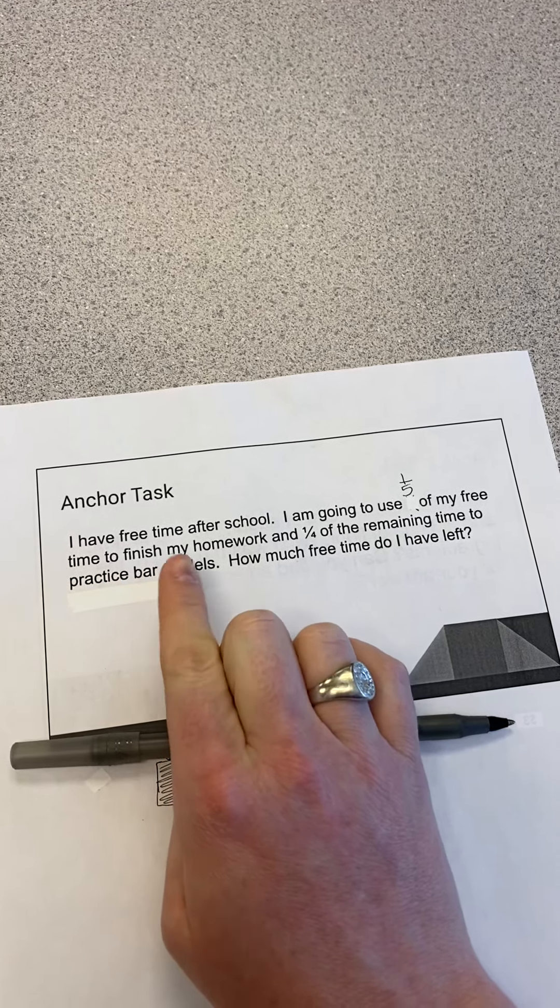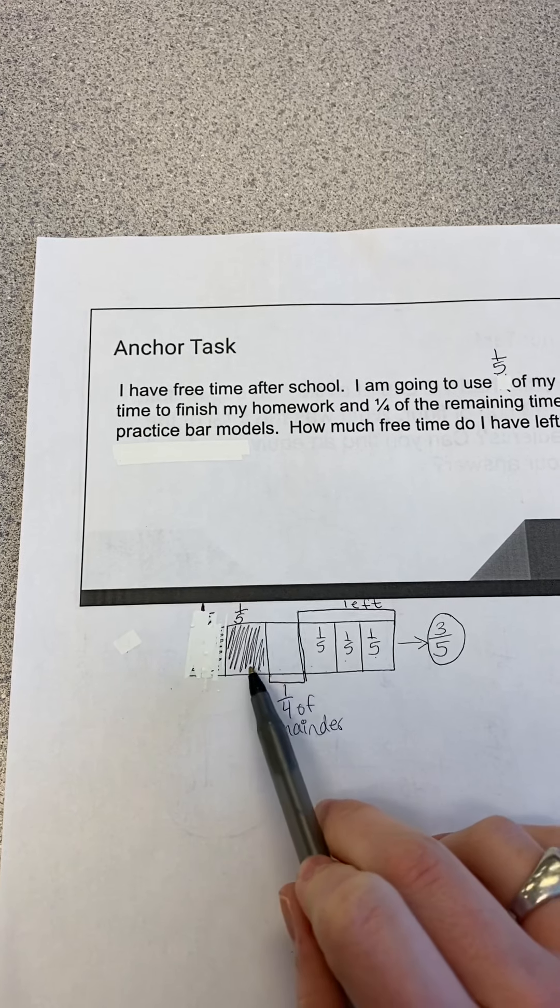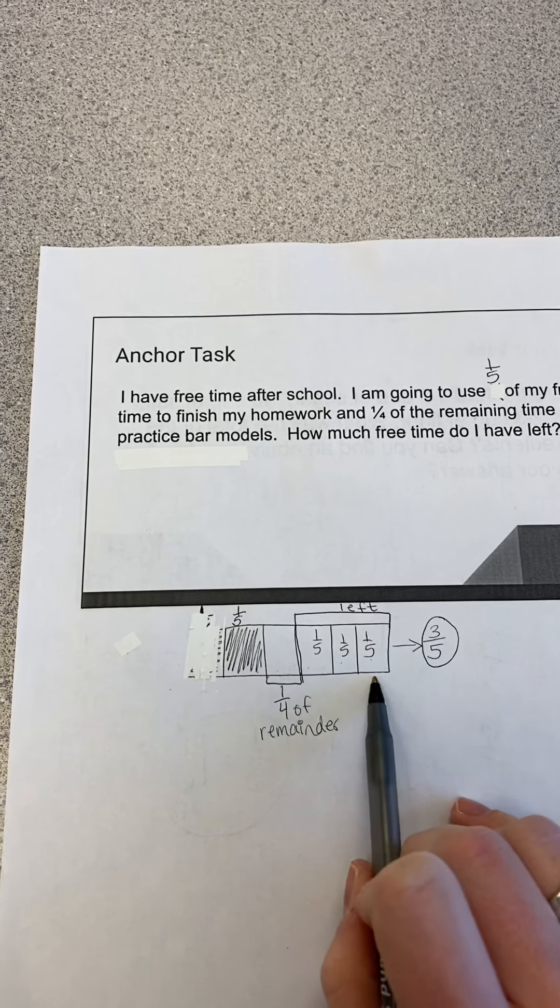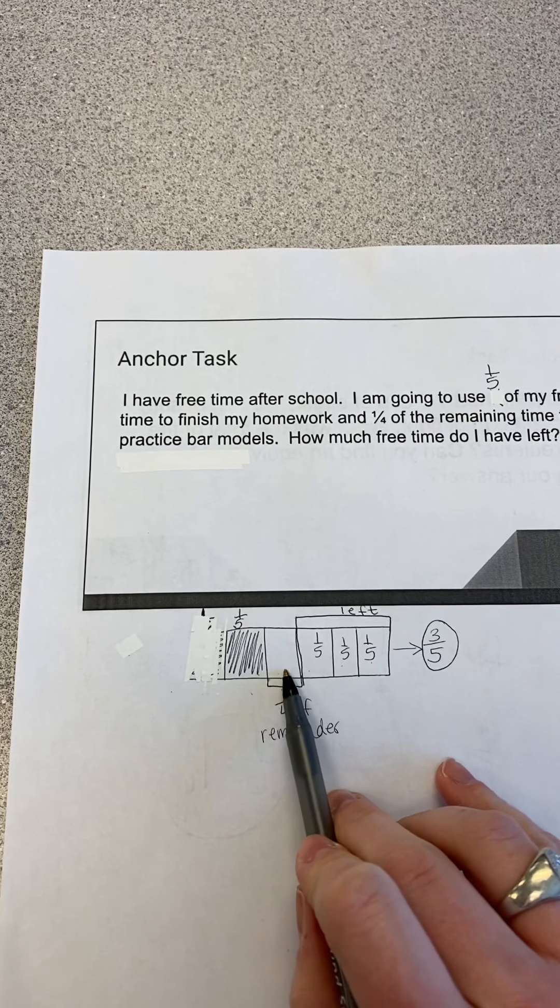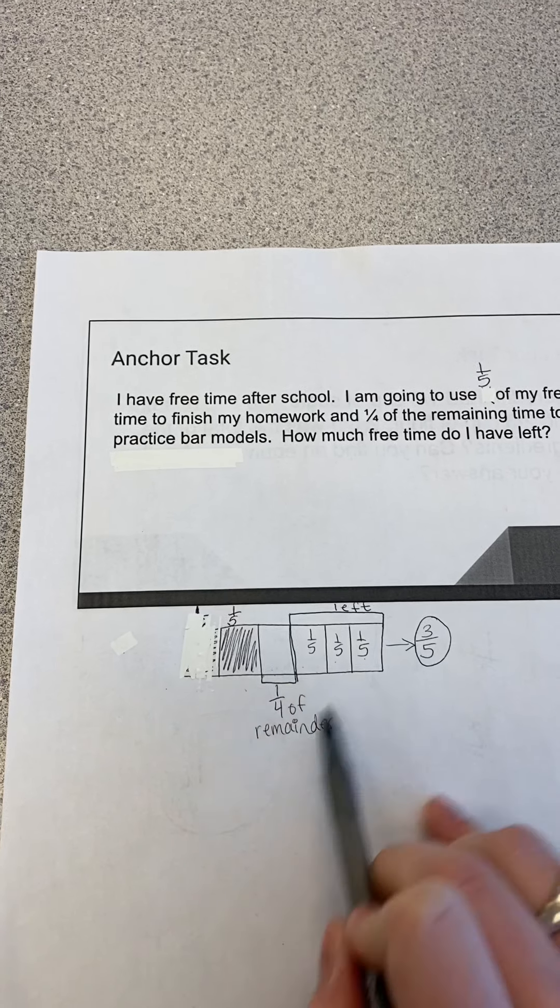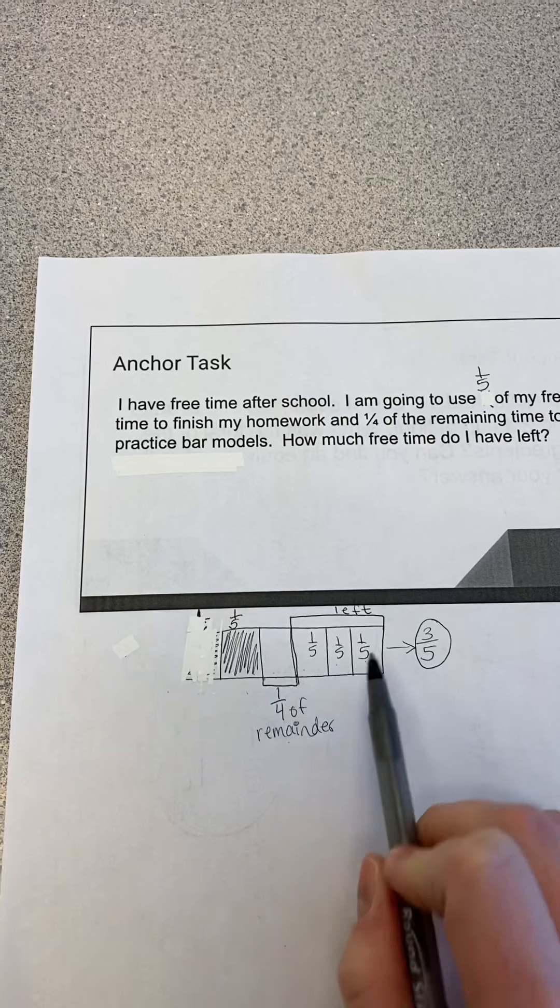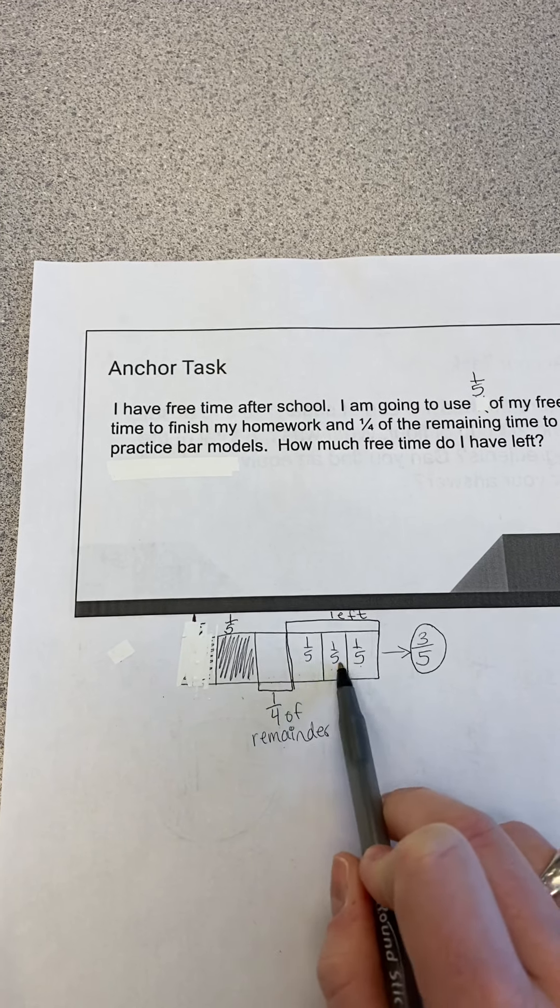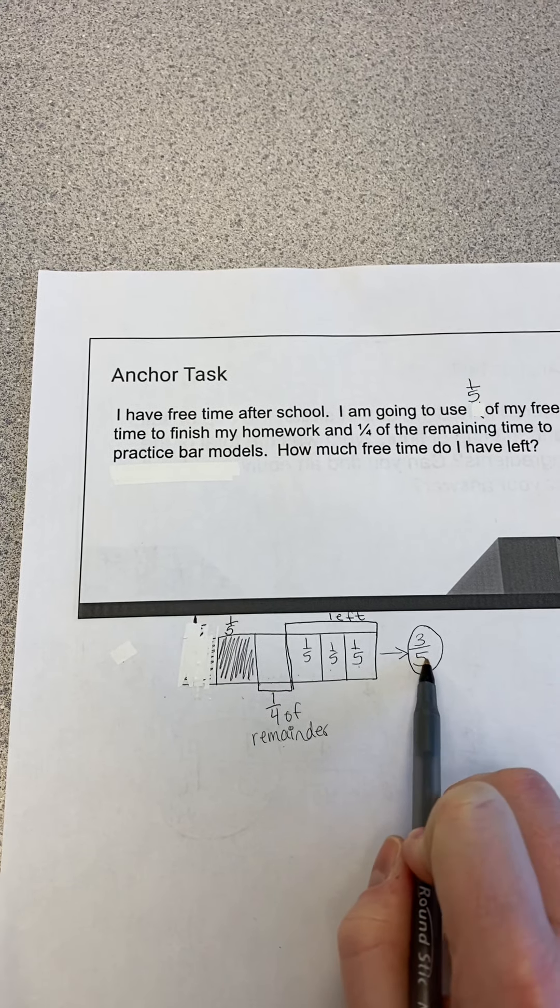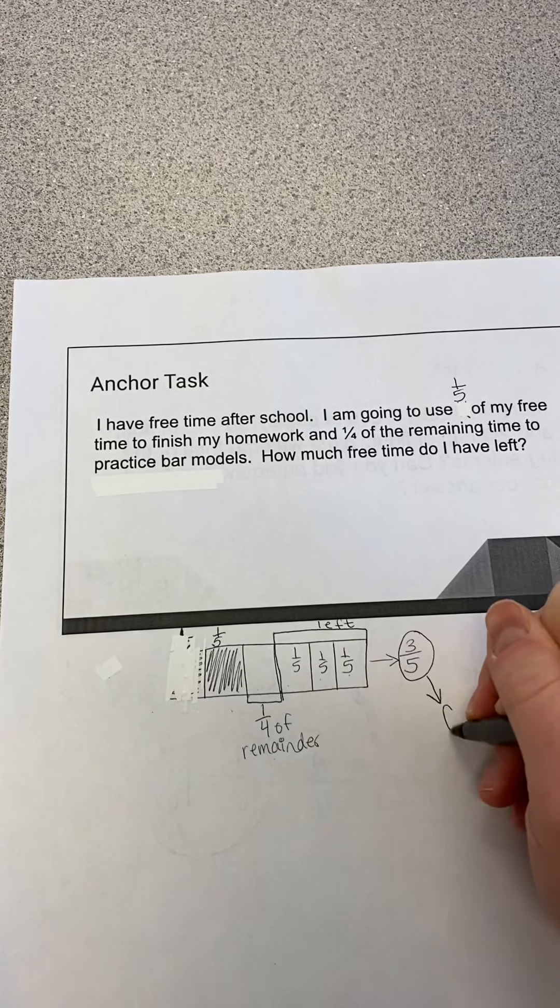I have one-fifth is what I'm using to do my homework. And then one-fourth of the remaining. So I have four pieces left of my fraction bar that I split into five parts. I have one piece of that four that are left, I'm going to use for bar models. And I have three-fifths that are not used. So three-fifths of my time is my free time.